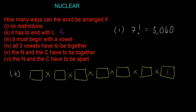After placing L in the last box, one letter is gone and we fill in the rest from left to right with no more restrictions. There are six letters left, so we go six, five, four, three, two, one. The answer is 6 × 5 × 4 × 3 × 2 × 1, which is 720 — that's the number of arrangements if it has to end with L.